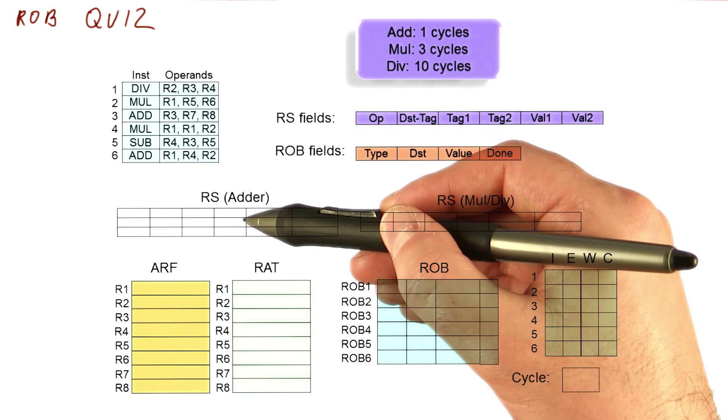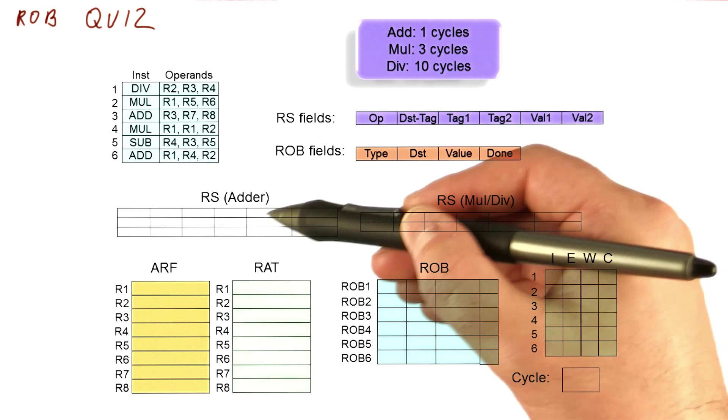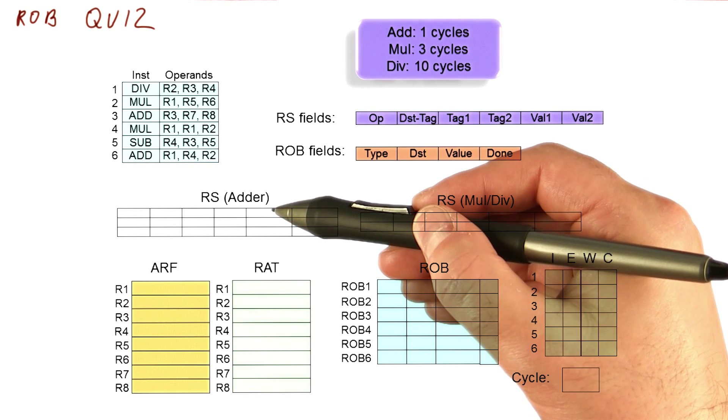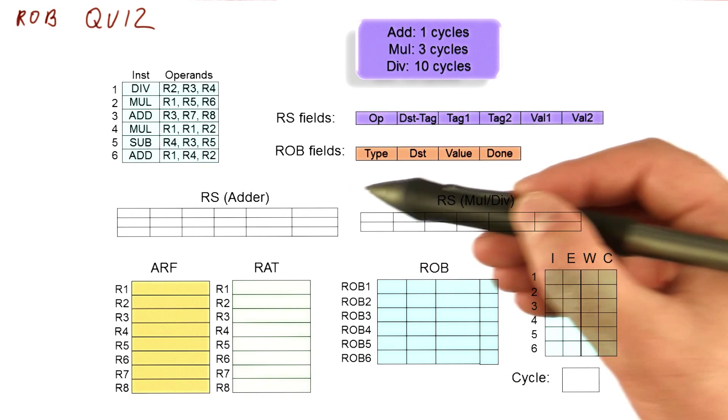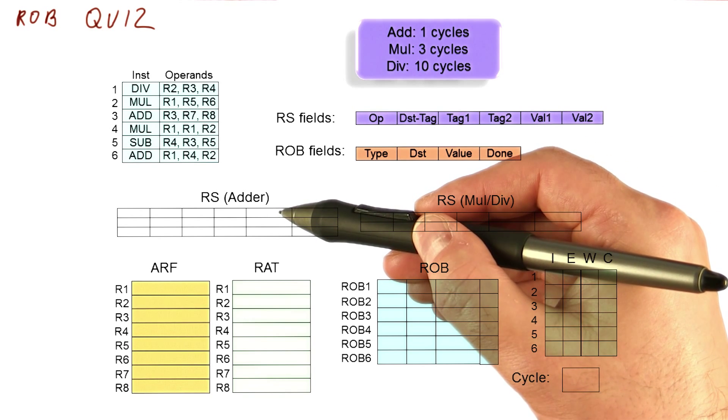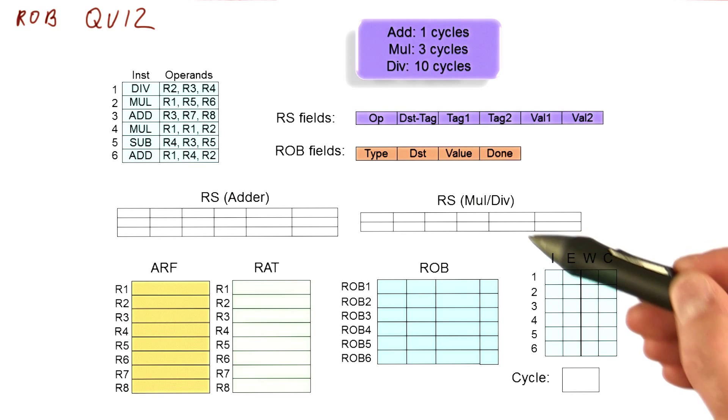Or if the instruction is issued in one cycle and it has operands ready to go, then it can dispatch in that same cycle so that it begins executing in the very next cycle. But the last cycle of execution will complete before we broadcast the results.